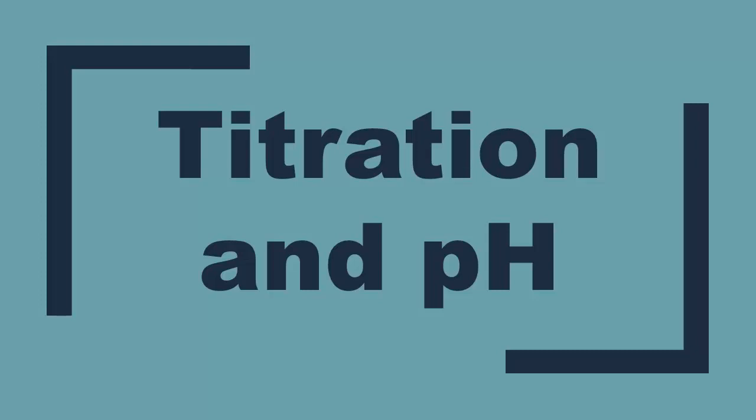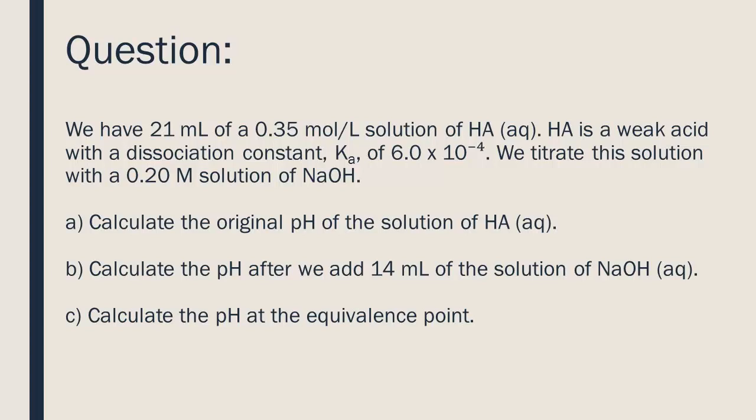Titration and pH. We have 21 milliliters of a 0.35 moles per liter solution of HA. HA is a weak acid with a dissociation constant Ka of 6 times 10 to the negative 4. We titrate this solution with a 0.2 molar solution of NaOH. Calculate the original pH of the solution of HA. Calculate the pH after we add 14 milliliters of the solution of NaOH. Calculate the pH at the equivalence point.